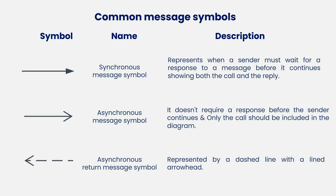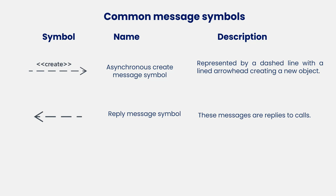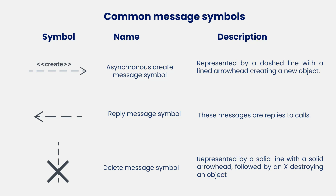An asynchronous return message symbol is represented by a dashed line with a lined arrowhead creating a new object. The reply message symbols are replied to calls. And the delete message symbol is represented by a solid line with a solid arrowhead followed by an X, destroying an object.